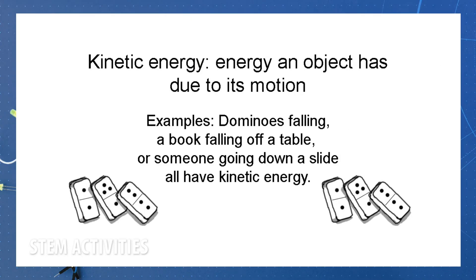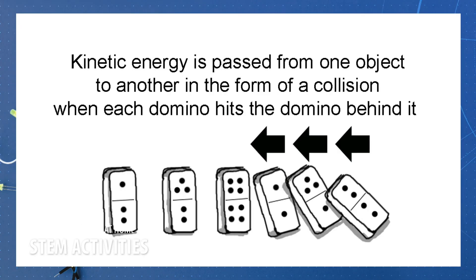Now kinetic energy is the energy an object has due to its motion. We will see this when the domino chain falls. The kinetic energy here will be passed from one object to another in the form of a collision when each domino hits the one behind it.